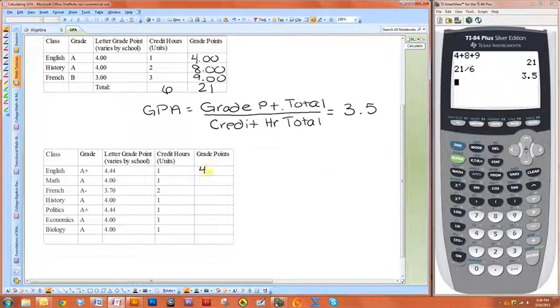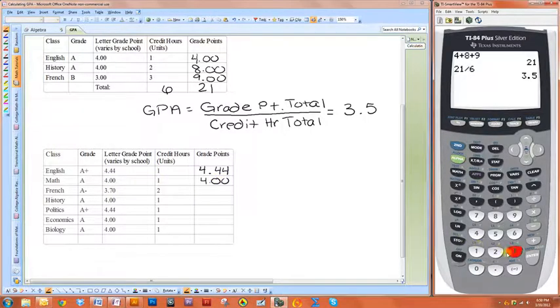So, if you made a 4.4, or an A plus in English, and a 4, I'm just taking this number and multiplying it by this one. So, for the next one, I have to do 3.7 times 2.